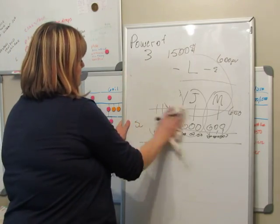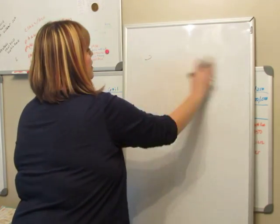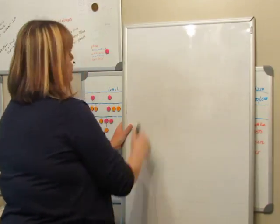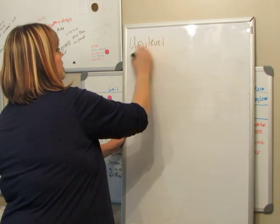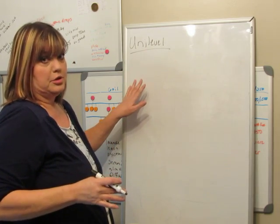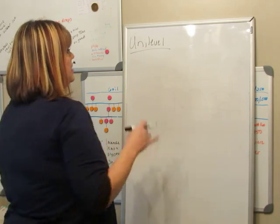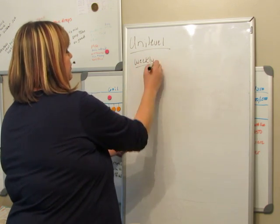So your next check is going to be called Unilevel. Now Unilevel is super exciting. This is literally where you are building your dynasty. Okay. And I don't use that term loosely. I'm very serious about this. So again, this is a weekly check. Comes with your Power 3 check around the 15th.